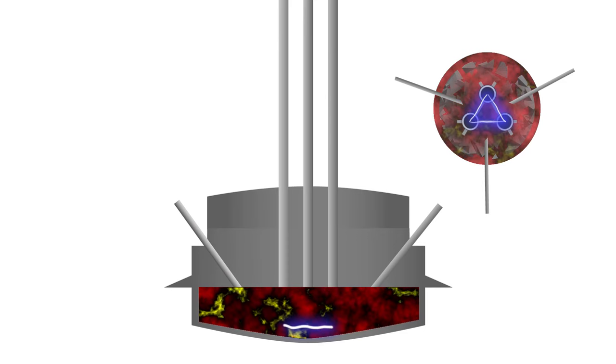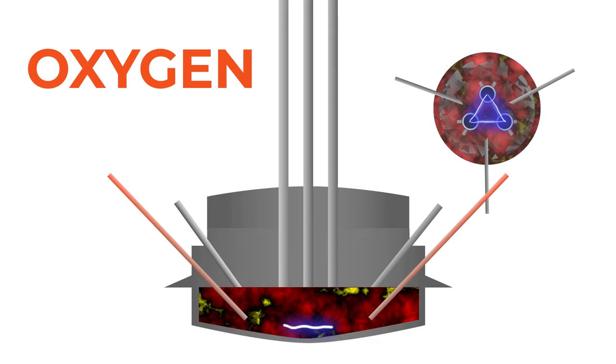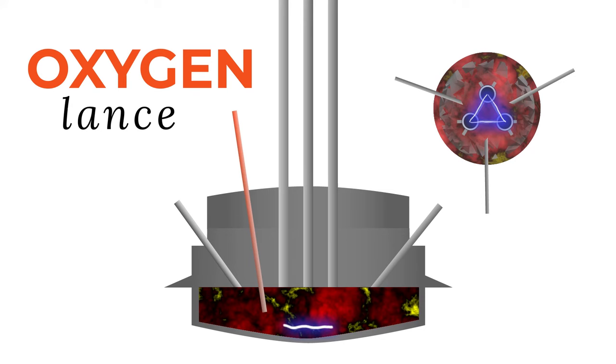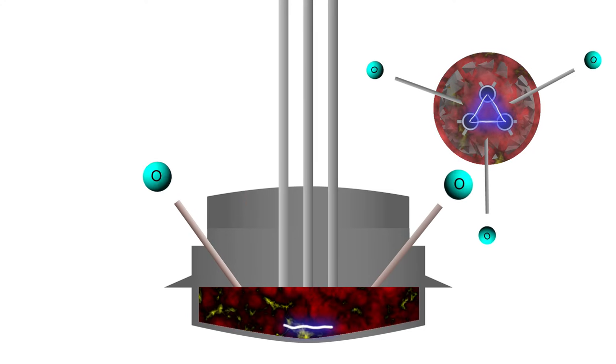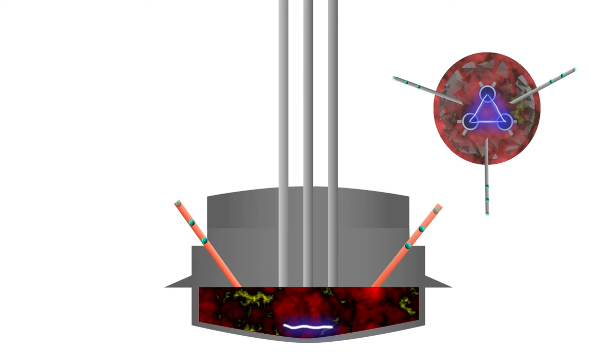Once melting has been achieved with temperature homogenization, oxygen is injected into the melt, either by separate oxygen injectors, an oxygen lance through a port in the roof, or more commonly, through the same injectors used for the burners.